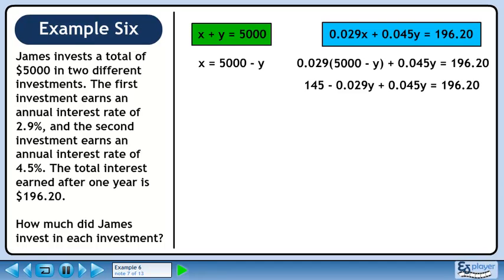Multiply 0.029 through the brackets. Collect terms with y on the left side and constants on the right side. This gives 0.016y equals 51.2. Divide both sides by 0.016 to get 3200.